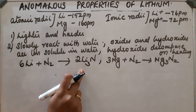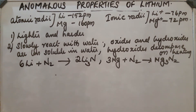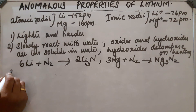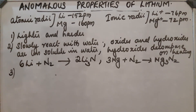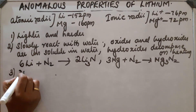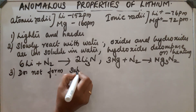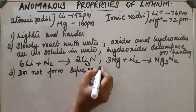Lithium nitride and magnesium nitride are obtained on combustion with air, as nitrogen reacts directly with lithium and magnesium. Other elements in their respective groups do not give this reaction. Additionally, their oxides do not form superoxides with excess oxygen.